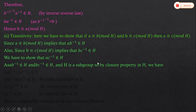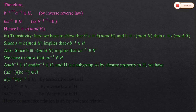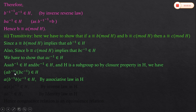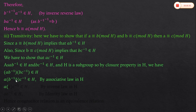Since a into b inverse belongs to H and b into c inverse belongs to H, these are two elements of H. H is a subgroup, so by the closure property, the product of these two elements also belongs to H. Using the associative law, we can rearrange the brackets, and b inverse into b gives the identity element e, by the inverse law.